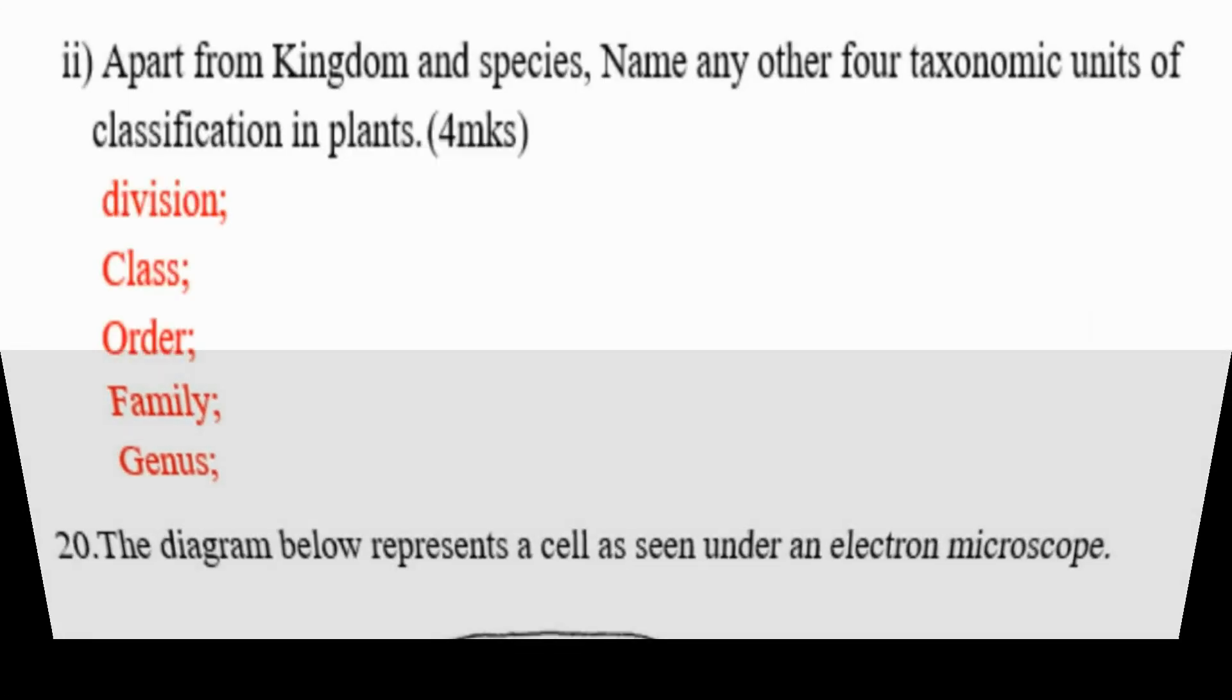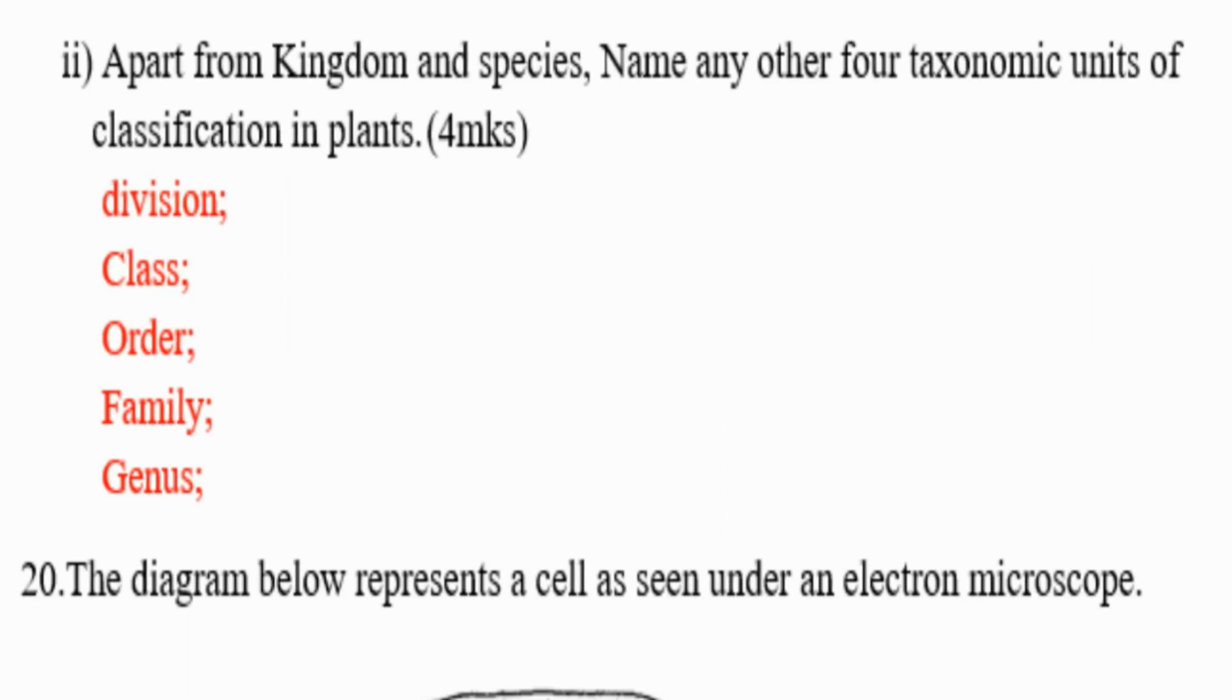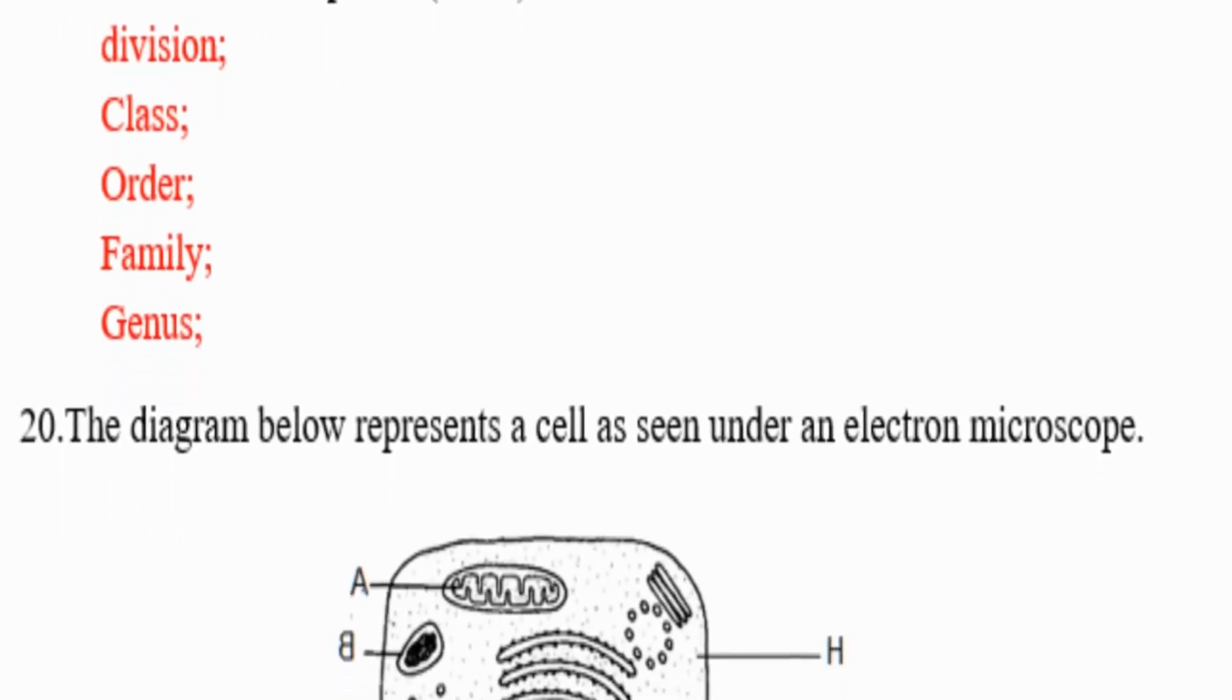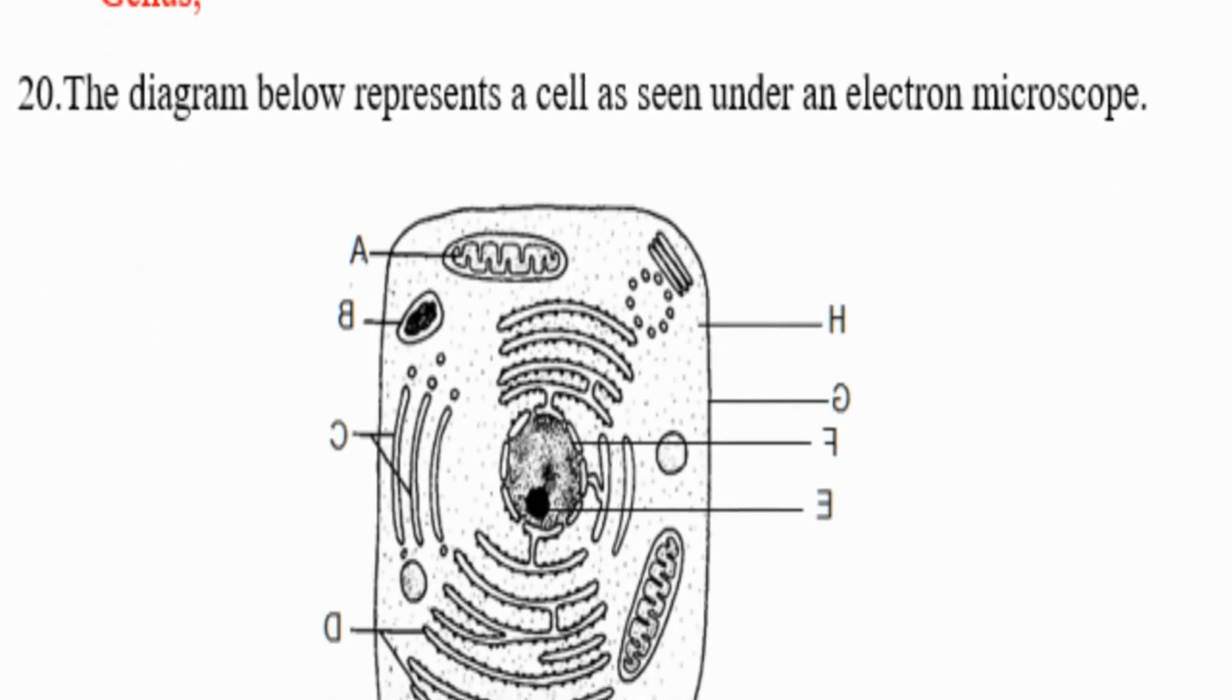Question: Apart from kingdom and species, name any other four taxonomic units of classification in plants. In that we have division, we have class, we have order, we have family, and then we have genus. Those are the taxonomic units that are used to classify plants.